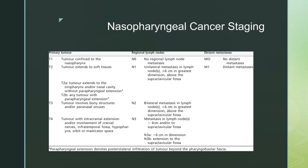Now, nasopharyngeal cancer TNM staging. T1: tumors confined to the nasopharynx. T2 goes to the soft tissues. T3 involves bony structures or paranasal sinuses. T4 involves intracranial extension or extension into the infratemporal fossa, down into the hypopharynx, to the orbit, or the masticator space.